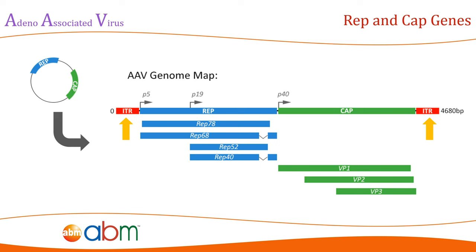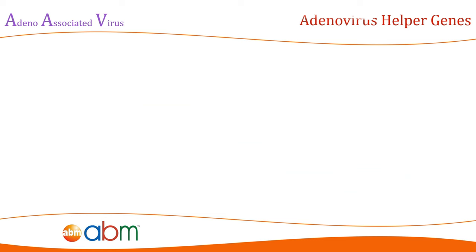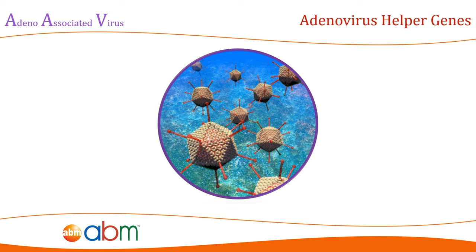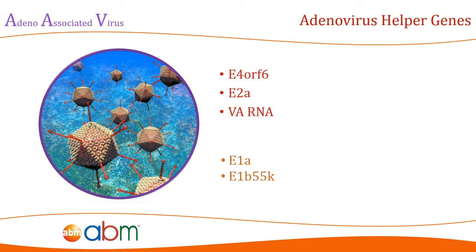Without the presence of the ITR regions on this plasmid, the rep and cap genes will not be packaged into the viral capsid during production and will remain with the parent cell for the duration of the production. The required adenovirus helper genes used in recombinant AAV production are provided on yet another separate plasmid. The identified helper genes from adenovirus are E1A, E1B55K, E4ORF6, E2A, and VA RNA.